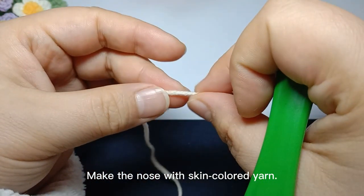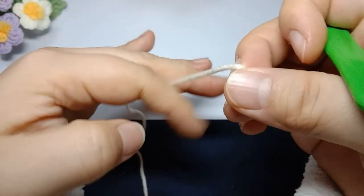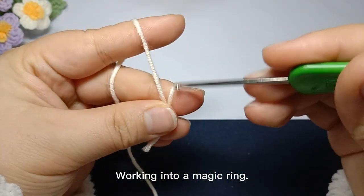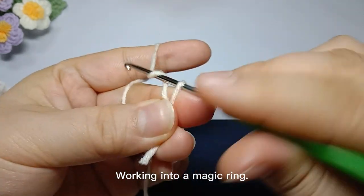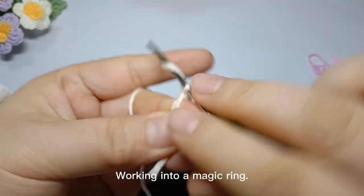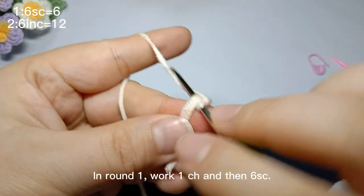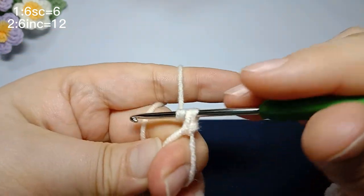Make the nose with skin colored yarn, working into a magic ring. In round one, work one chain stitch and then six single crochets.